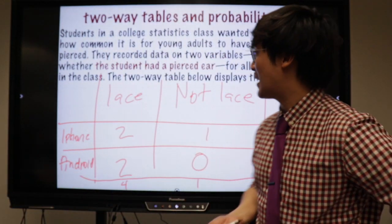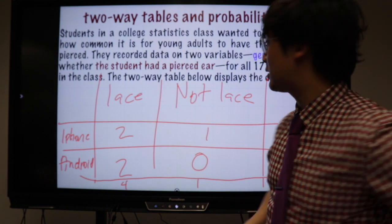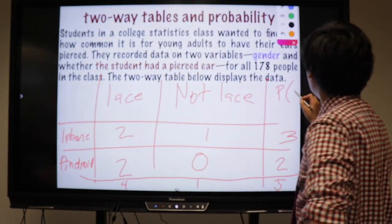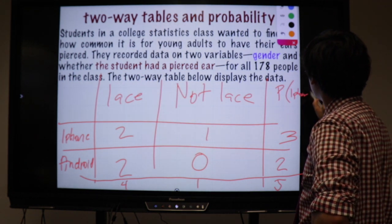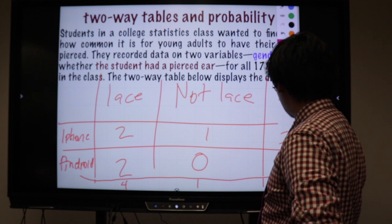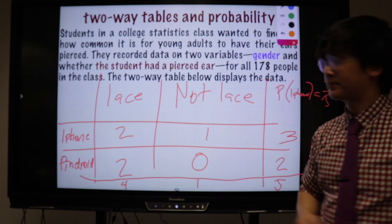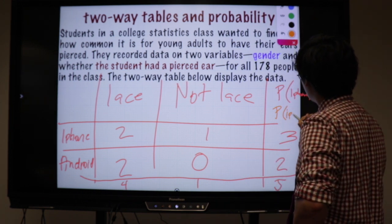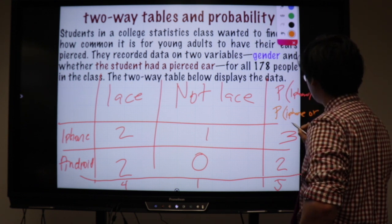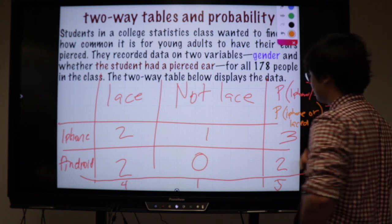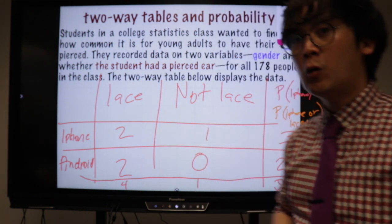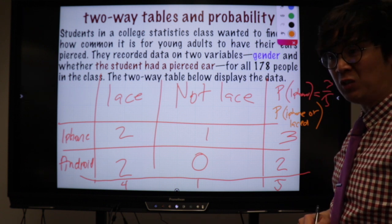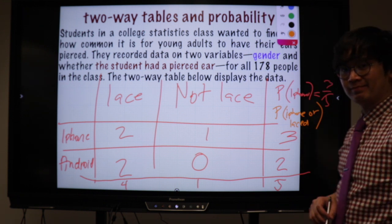Why is it important to know how to work on probability questions involving two-way tables? It gives us more information. What's the probability that if I select a student in this group, it will be a student with an iPhone? That's 3 out of 5, which is correct.